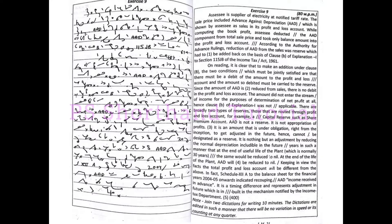SSE took only the balance amount into the profit and loss account. According to the Authority for Advance Rulings, reduction of AAD from the sales was reserved.